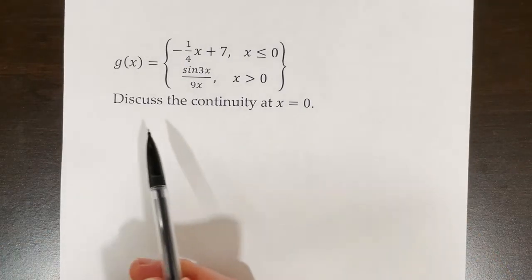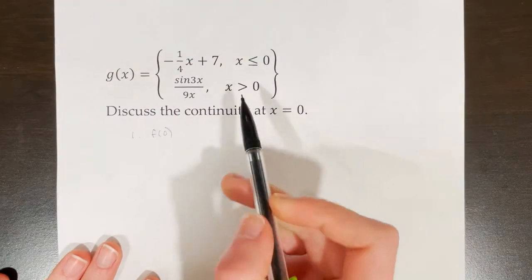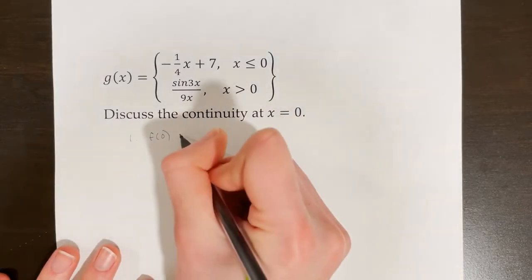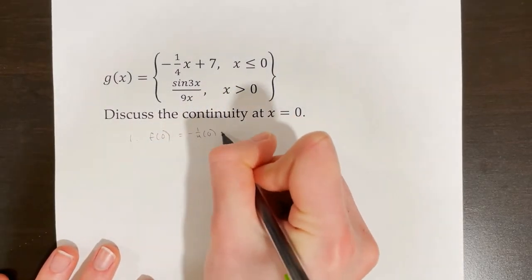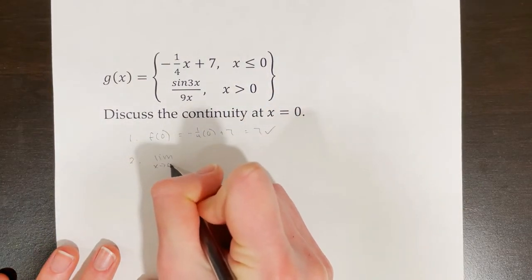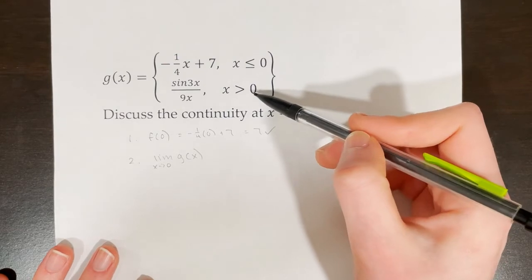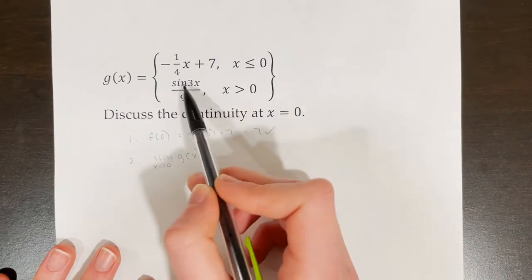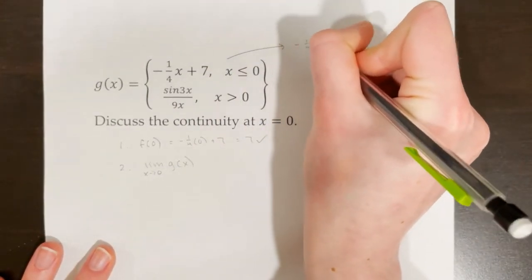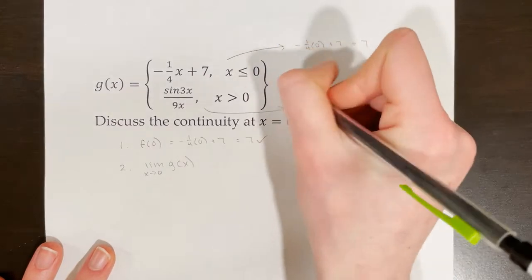In this bottom example, we're asked to discuss the continuity at x equals zero. First, find f of zero. We plug into the top function because that's where the domain restriction works — zero is less than or equal to zero. Negative one fourth times zero plus seven equals seven. Step one works. Now we find the limit as x approaches zero of g of x. We look at the left-sided and right-sided limits using direct substitution. For the top function: negative one fourth times zero plus seven equals seven.